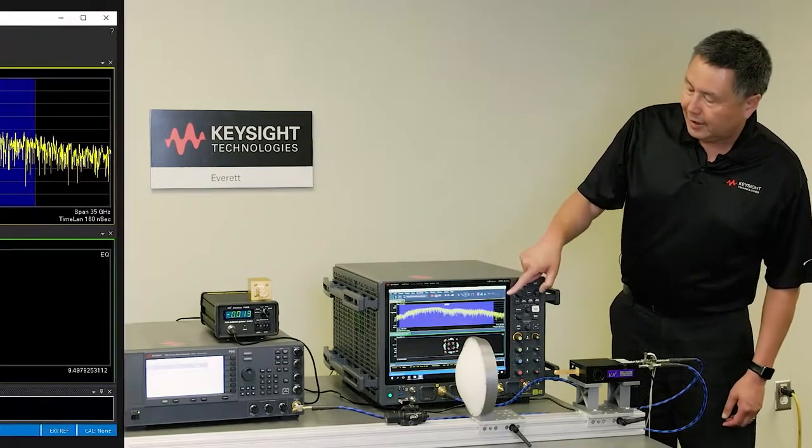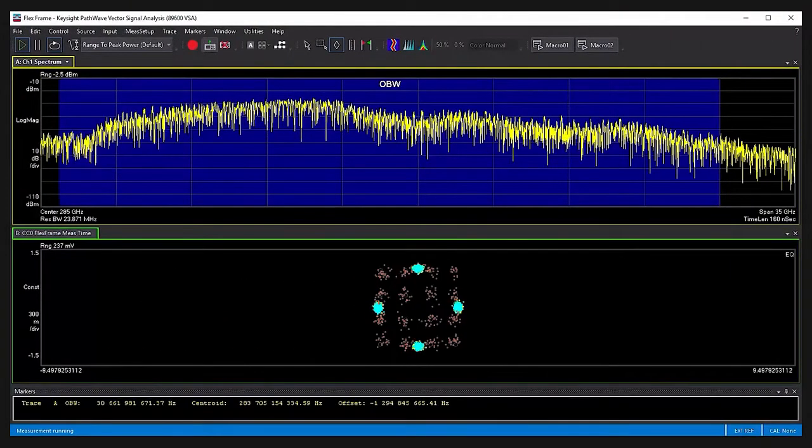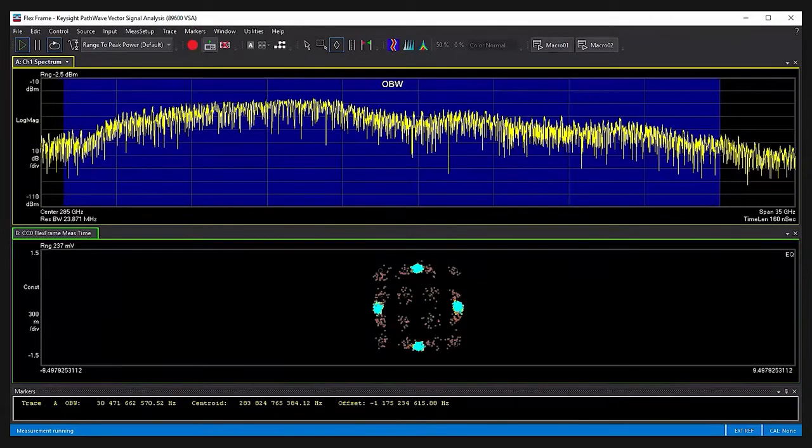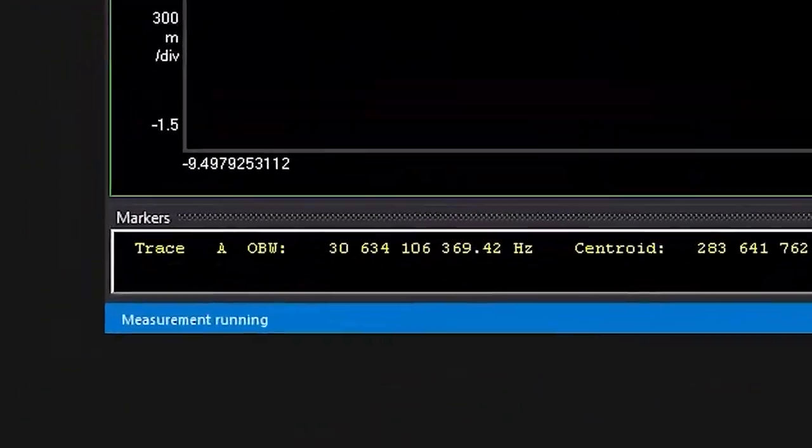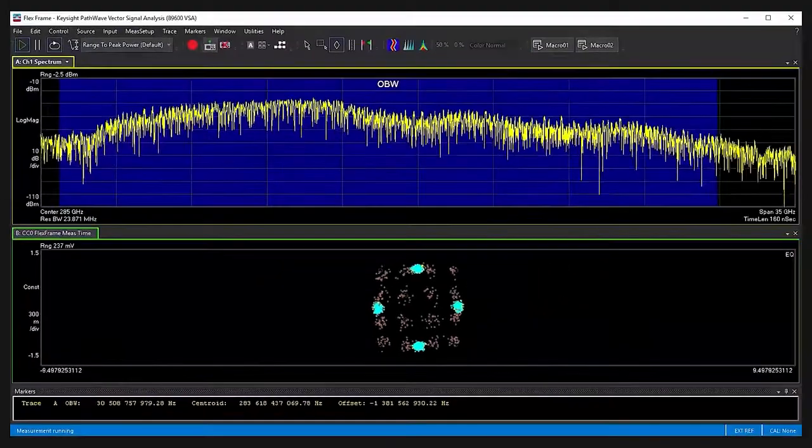We can see the spectrum centered at 285 gigahertz. The blue shaded region is an occupied bandwidth measurement showing an occupied bandwidth of 30 gigahertz. We can also see the 16-QAM constellation.